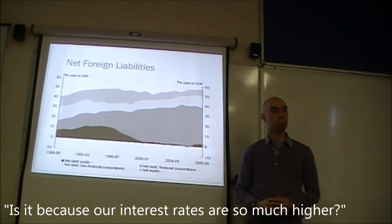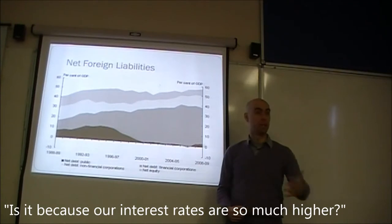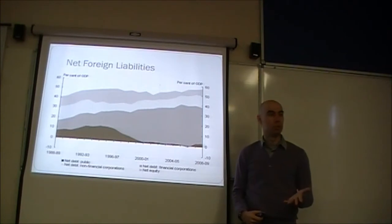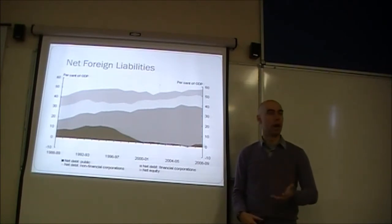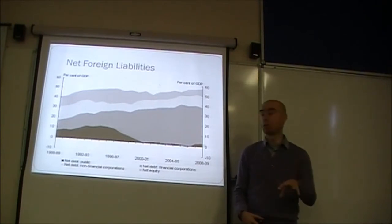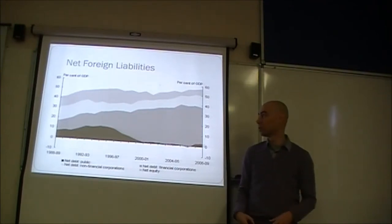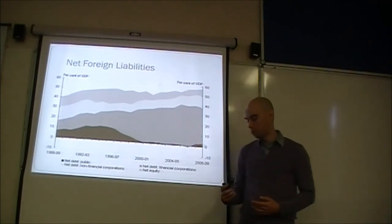Higher interest rates mean money comes into Australia because it's profitable to bring capital here. Even now with Australian interest rates at around two and a half percent, the rest of the world is at zero to one percent — giving a one and a half to two and a half percent premium. A few years ago it was four percent versus zero to one percent elsewhere, so there was a three to four percent premium to bring money into Australia — very profitable to do so.